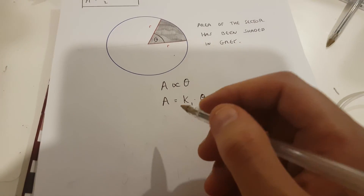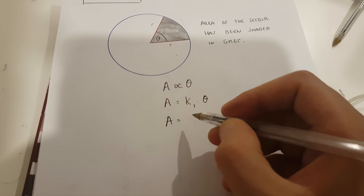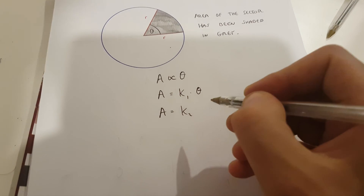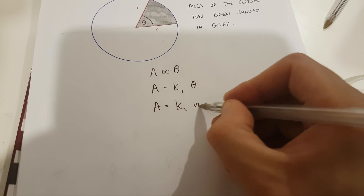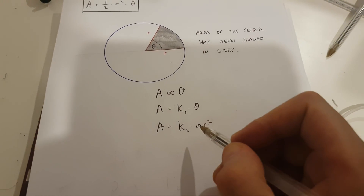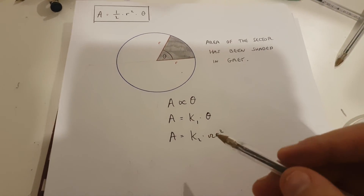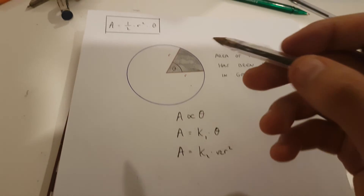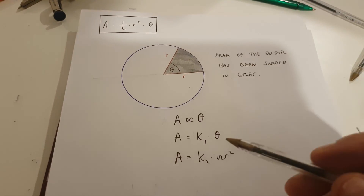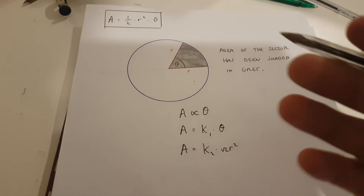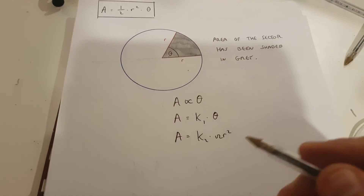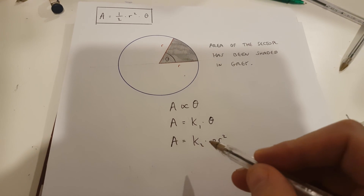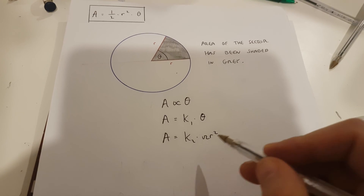The area of this sector is also going to be equal to a constant, we'll call it k2, multiplied by pi r squared. Because the area of a circle is pi r squared, and since the area of a sector is probably going to be smaller than the area of the circle, the area of the sector is equal to k2 multiplied by pi r squared.